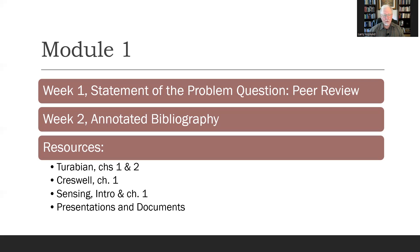Week two will have something else in your discussion group. You will be given an annotated bibliography assignment, which I'll say more about when we introduce week two. Some good resources for module one: Turabian chapters one and two. Remember, the first half of the Turabian textbook is about academic research and writing — it's just the second half that has all of the formatting guidelines. Creswell is probably our primary research methods textbook; read chapter one in module one. Sensing is good because it's written specifically for Doctor of Ministry students, so read the introduction and chapter one in that textbook.